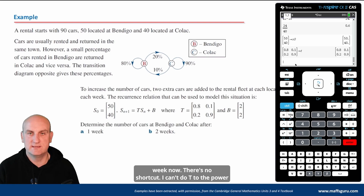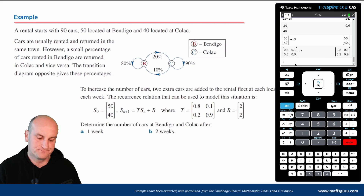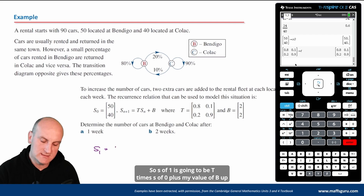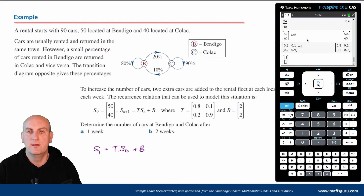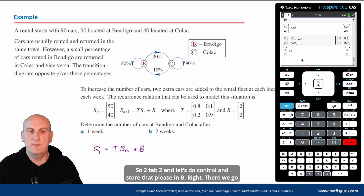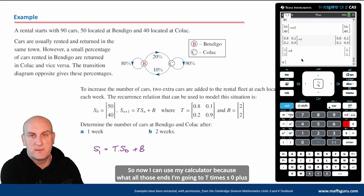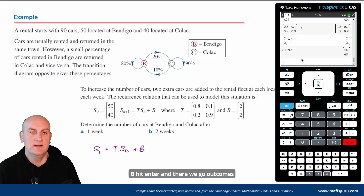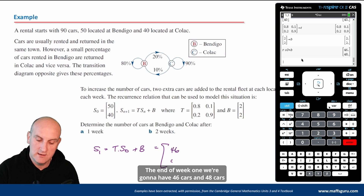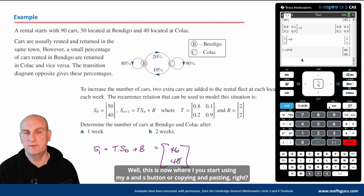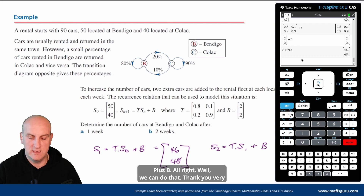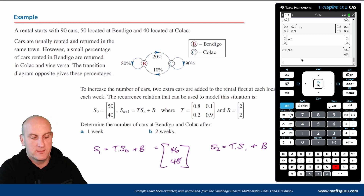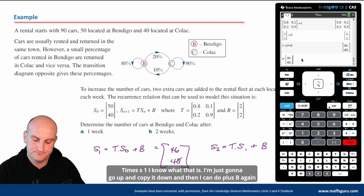There's no shortcut with T to the power n here, so we go week by week. For week 1: s of 1 equals T times s0 plus b. On the calculator, compute T times s0 plus b and we get 46 cars in Bendigo and 48 cars in Colac. For week 2: s of 2 equals T times s1 plus b. Use the answer from week 1, multiply by T and add b again — we get approximately 44 and 54.